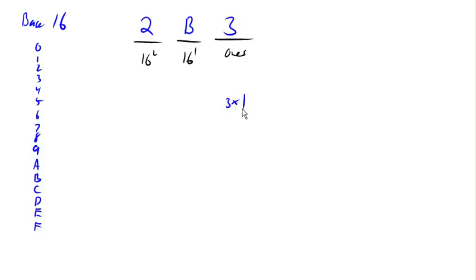b, remember, is representing 11. So 11 16s, and 2 16 squareds. So this is 2 times 16 squared plus 11 times 16 plus 3 times 1. This ends up being 691 in our base 10 system.